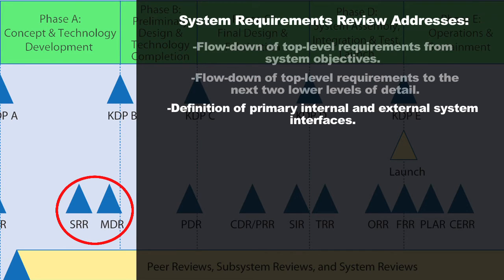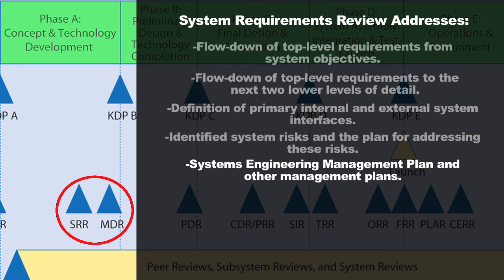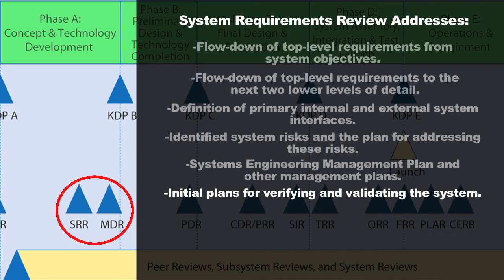The team will also look to see if all the internal and external system interfaces have been clearly defined, that all the risks for development have been clearly identified and there's a plan for addressing them, and that a system engineering management plan along with all other management processes and tools have been put in place. They'll also check that there's an initial plan for verifying and validating the system. A requirement might be a performance capability — for instance, a thruster needs to provide a certain amount of thrust.